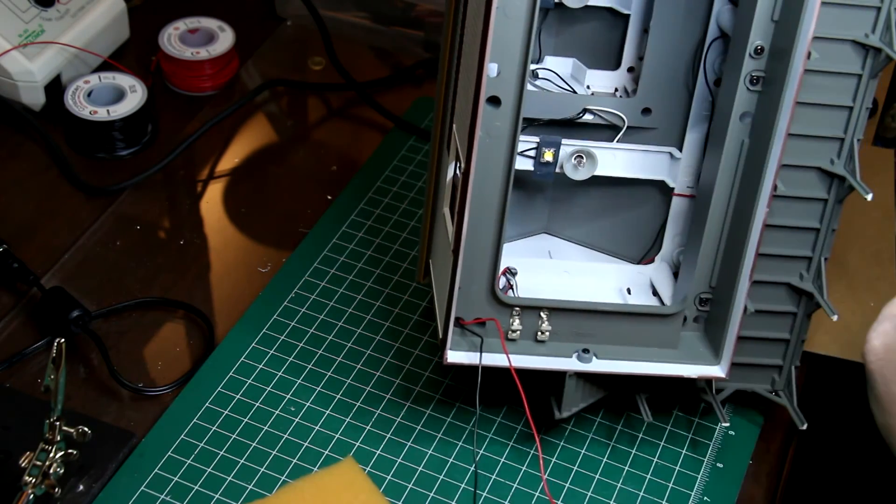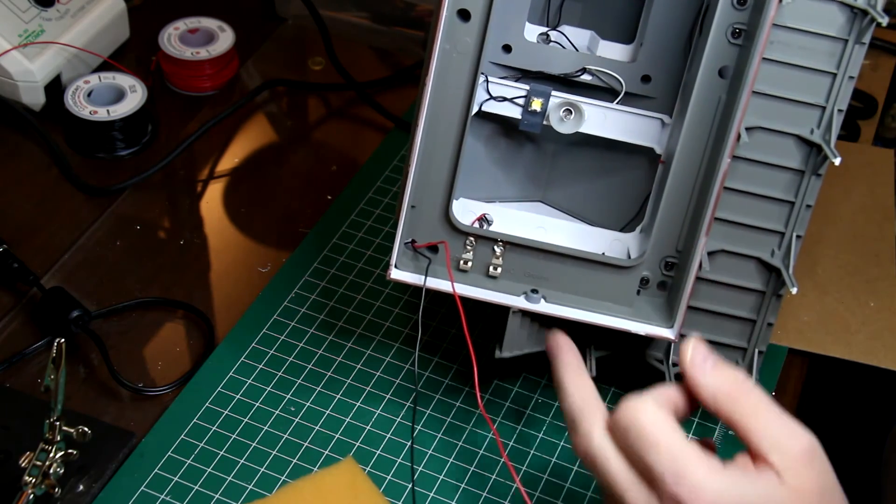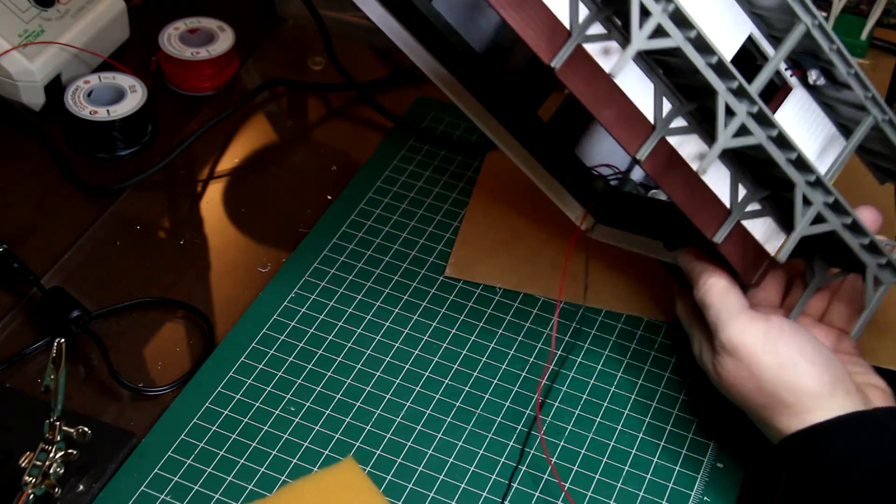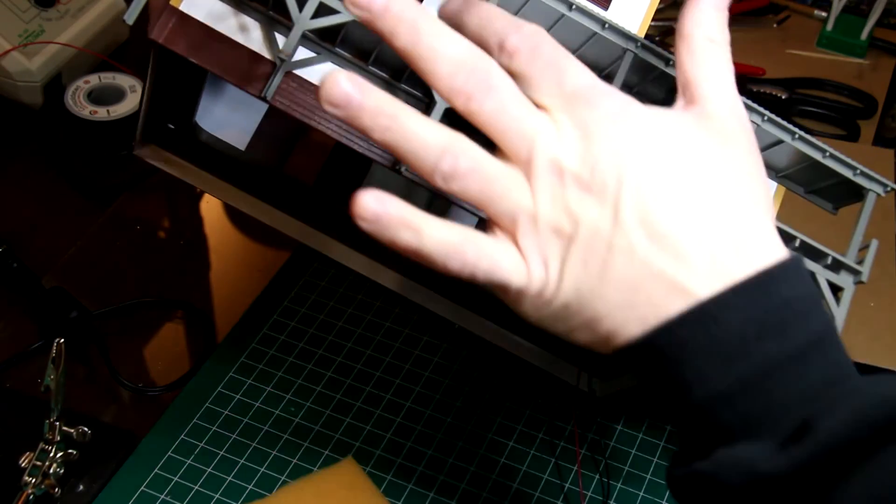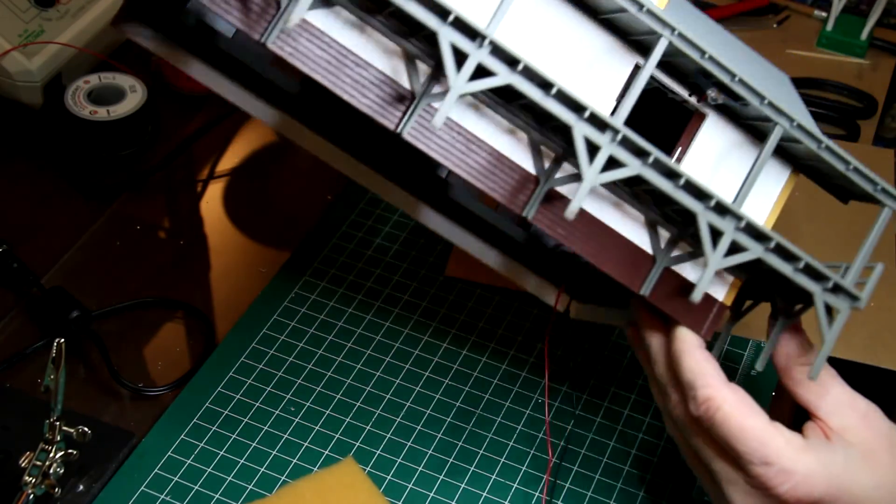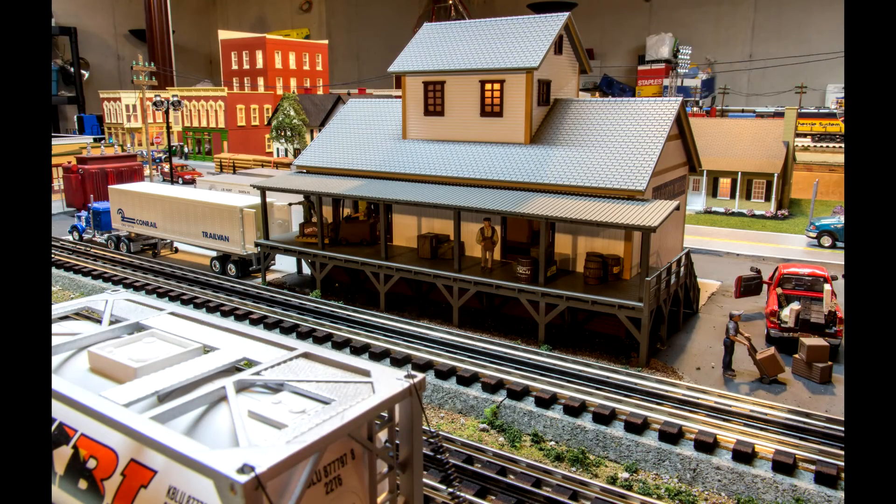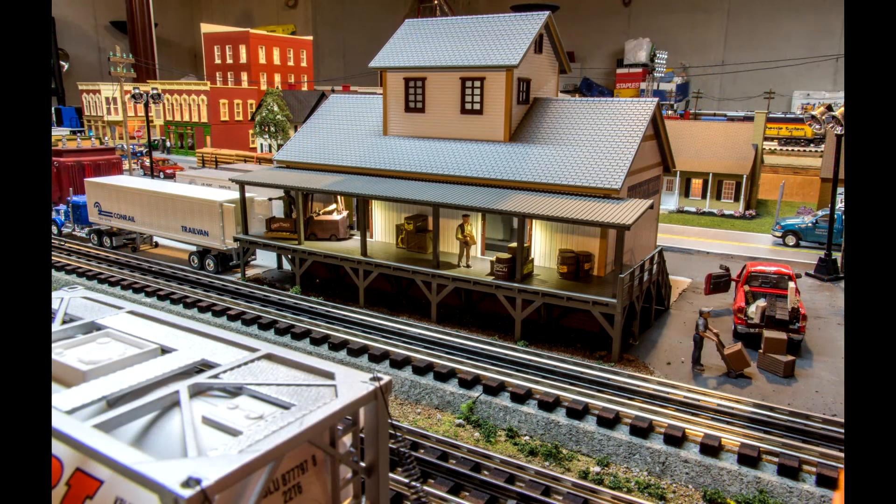And as mentioned I left the original incandescent bulbs wiring and contacts in place in case they're required to be used in the future. Here's the original incandescent bulbs look under the roof and at the top through the window, and now the LED version.